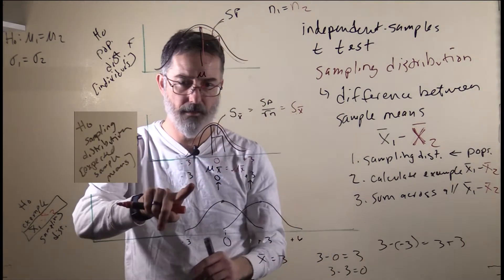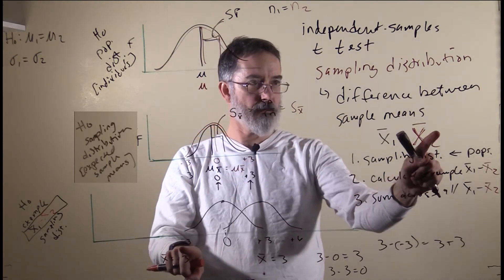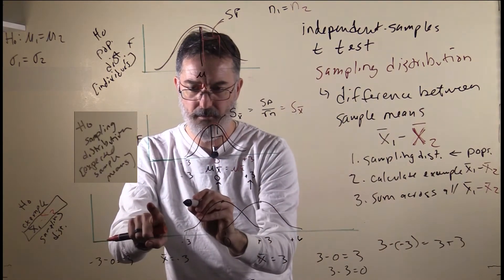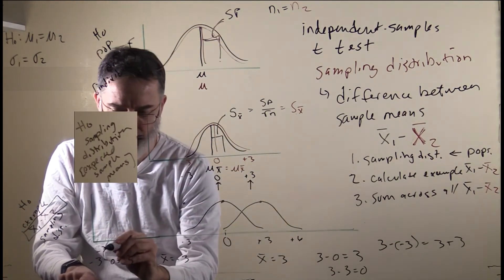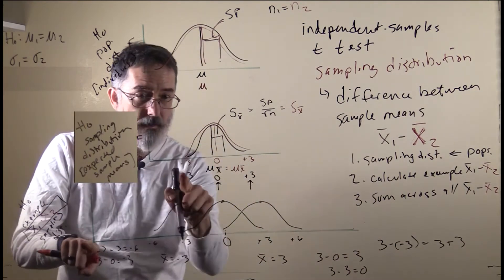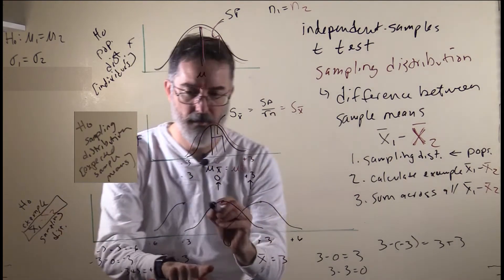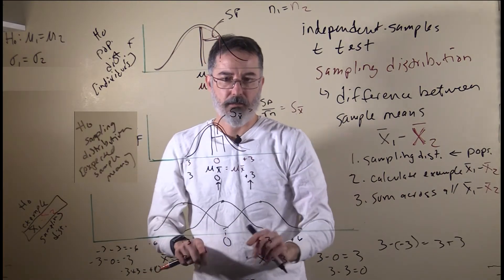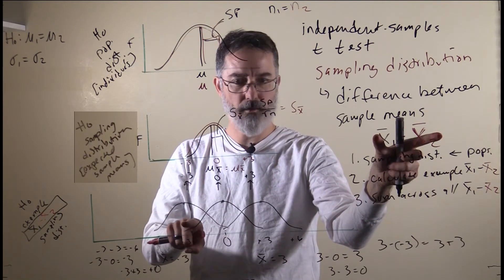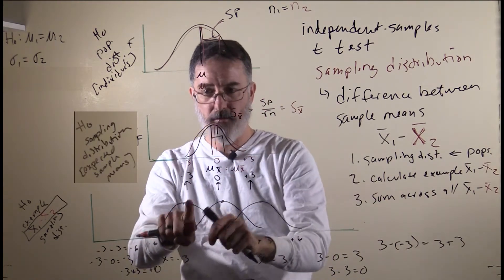For black means equal to negative three, when we subtract the red means, most red means are zero, so negative three minus zero equals negative three, centered there. If we subtract positive three, we get negative six. And negative three minus negative three gives zero. So those distributions are spread across negative six, negative three, and zero. These are the kinds of differences you observe for black means at plus three, zero, and negative three.